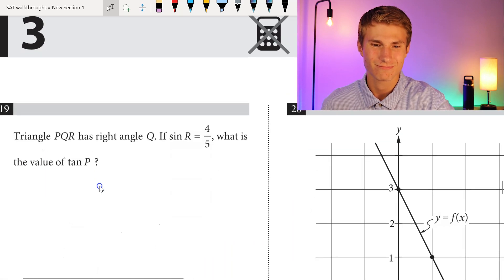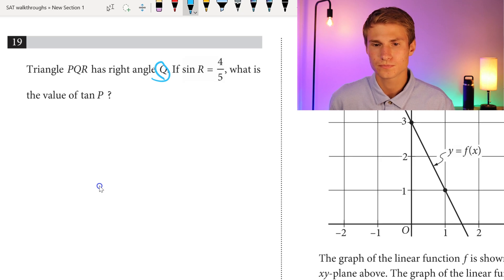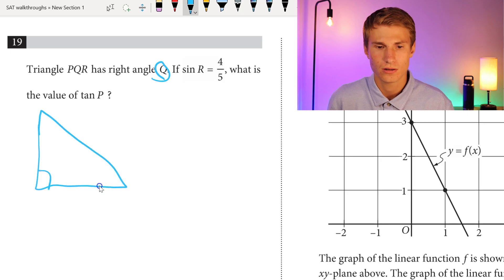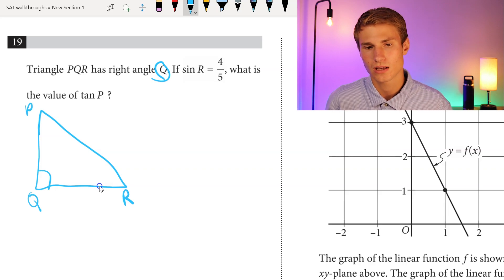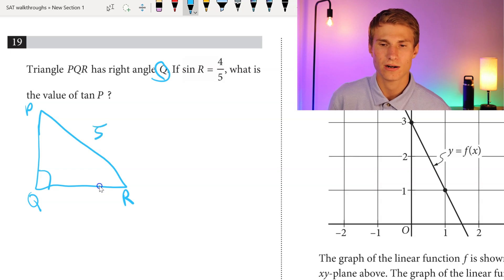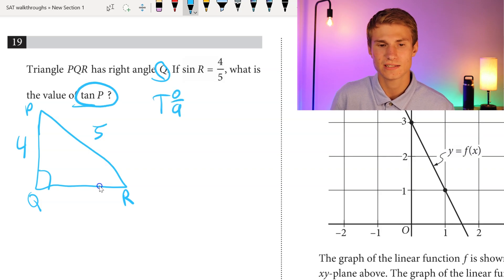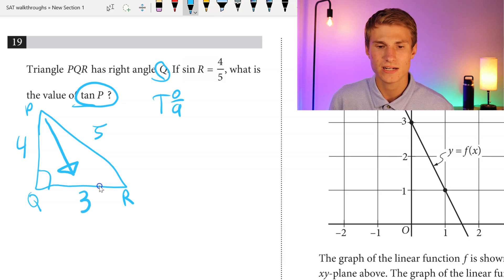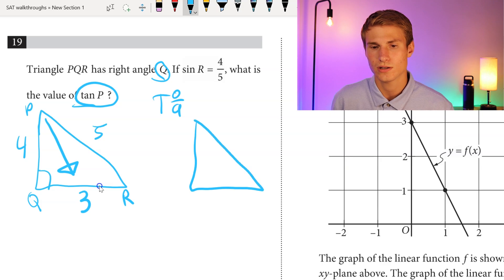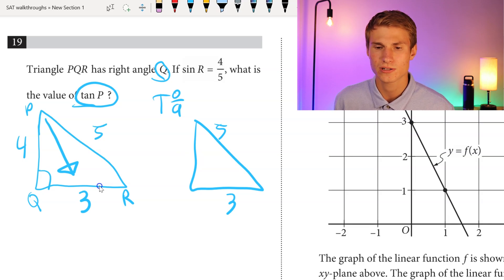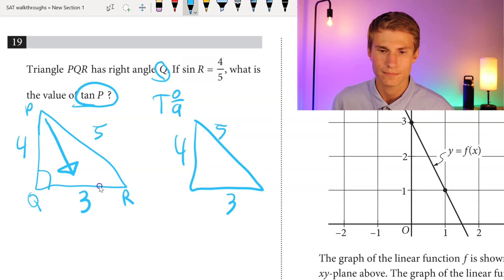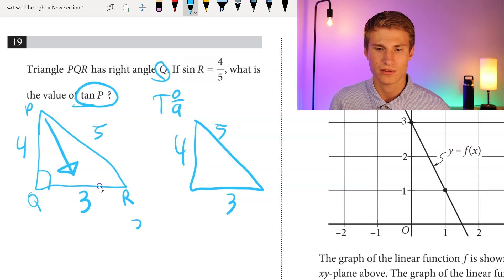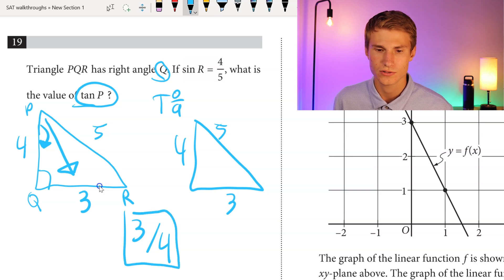Moving on to number 19: triangle PQR has a right angle at Q. If the sine of R equals 4 fifths, meaning our opposite is 4 and hypotenuse is 5, what is the value of the tangent of P? Our tangent is opposite over adjacent. Since we have a 3-4-5 triangle — any time you have a hypotenuse of 5 and one leg of 4, the other leg must be 3 — the opposite of angle P is 3 and the adjacent leg is 4. So the tangent of P is 3 over 4.